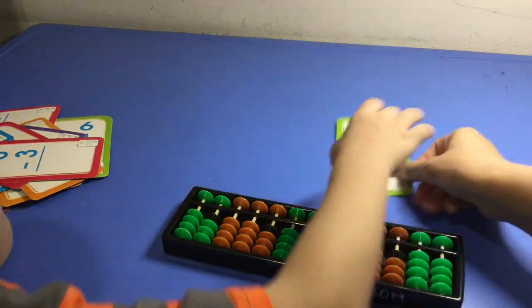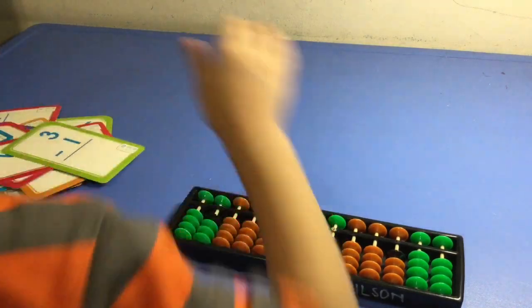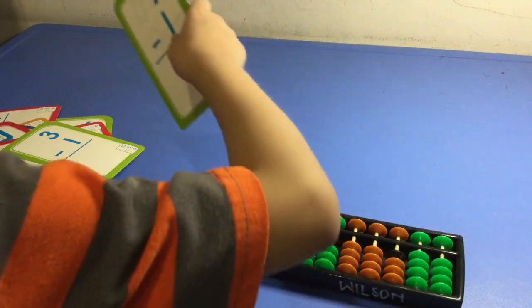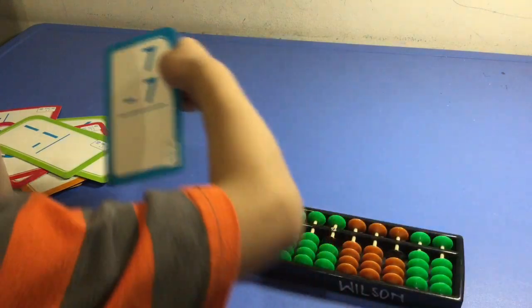Three minus one. Two. One minus one. Zero. Seven minus seven. Zero.